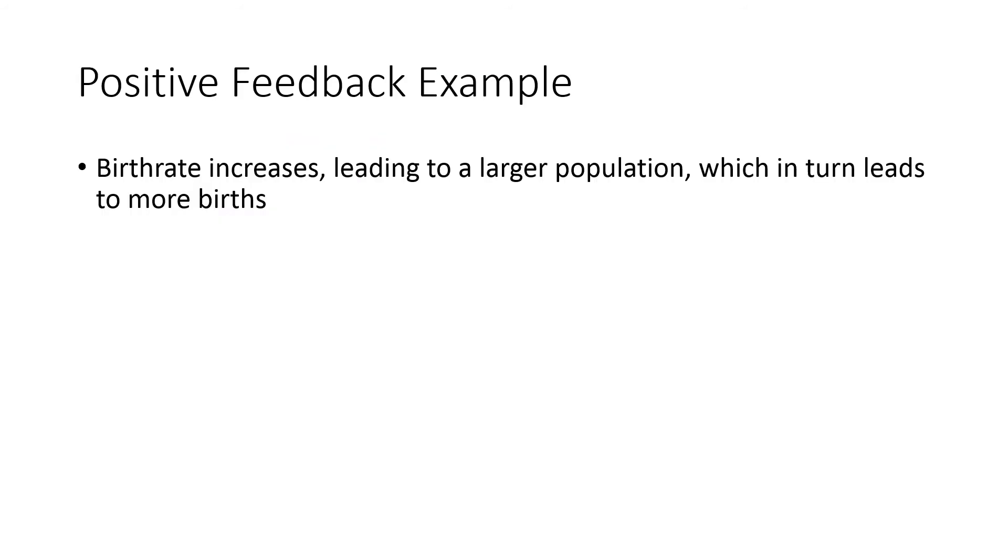Positive feedback can destabilize a system. As you can see here, if the birth rate increases, then the population increases overall, which can in turn lead to more births and an increased birth rate. That system would be moving further away from its previous stable state.